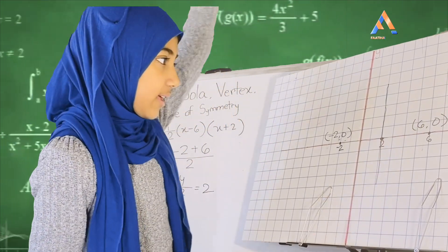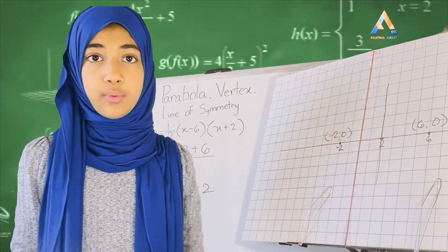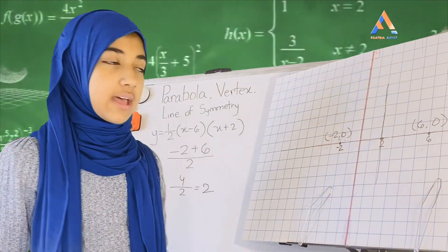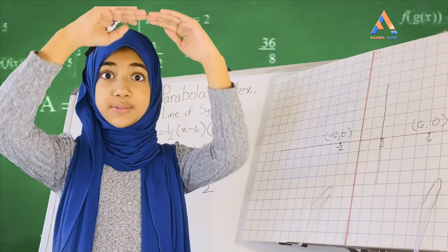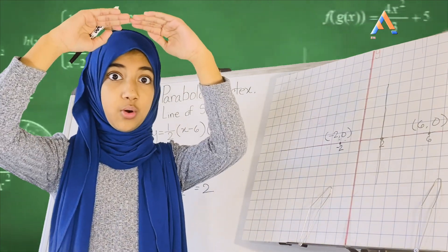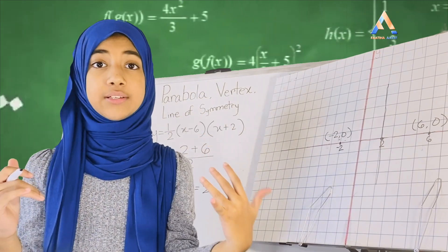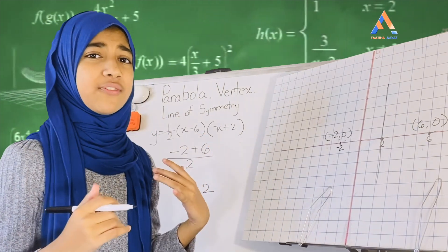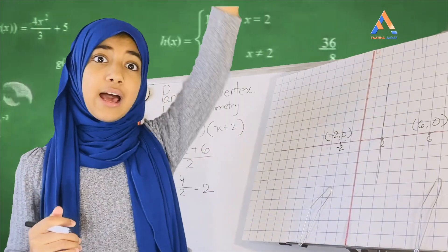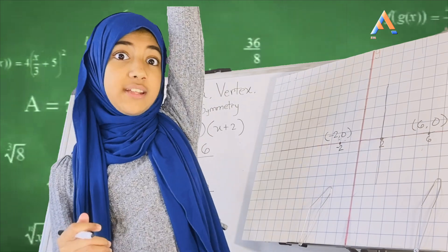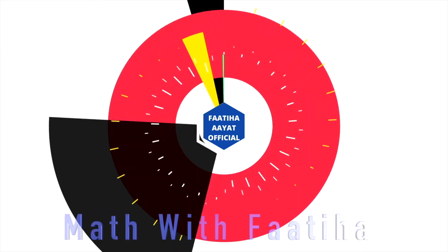It goes right in between these two points. Now a parabola can either be like an upside-down U or just a U. We need to figure that out, and we need to figure out the vertex. The vertex is basically the highest point or the lowest point of the parabola.